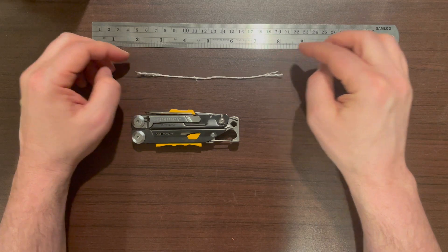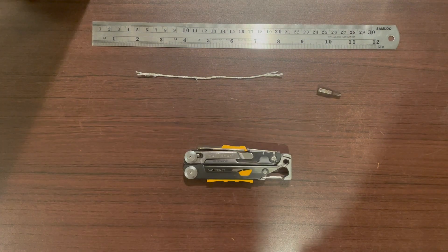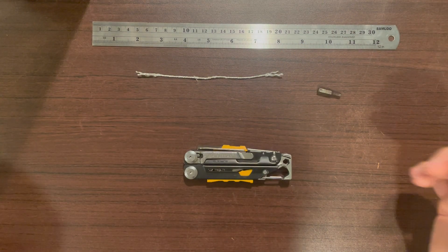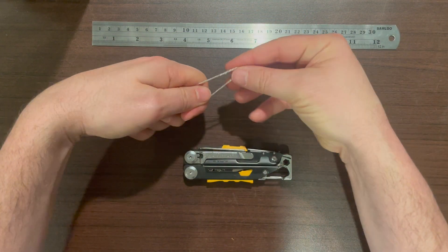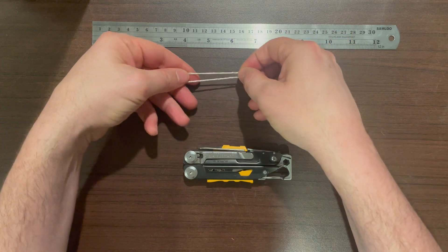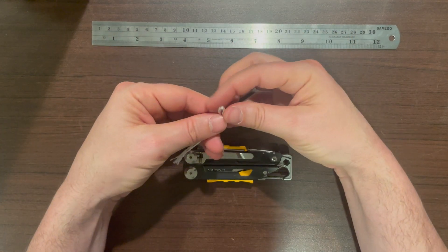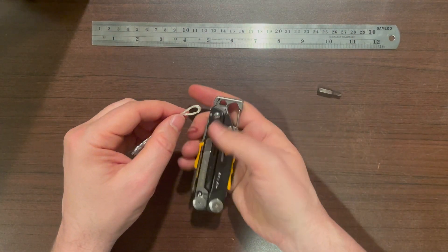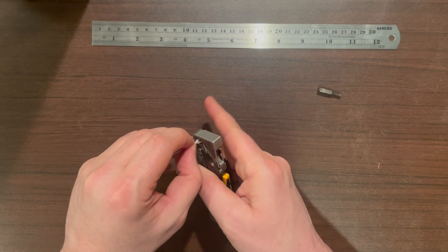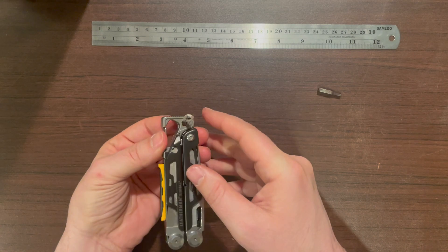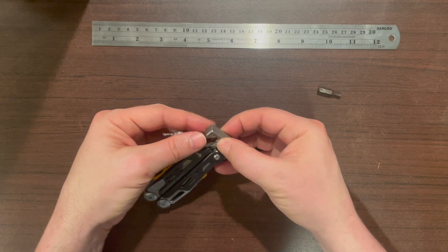To get this to work in the simplest way, fold your rope in half. Then push the loop end through from the bigger side of the hole to the smaller side. Take your other two ends and push them through that loop.